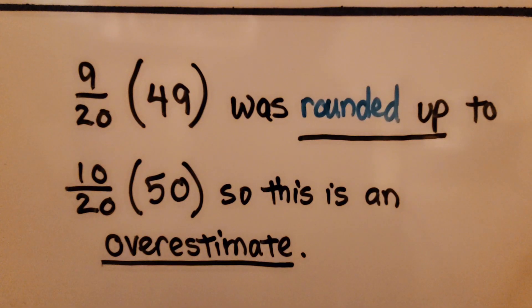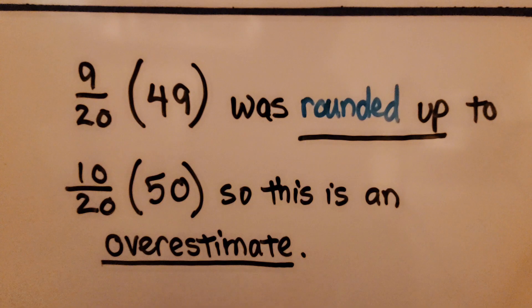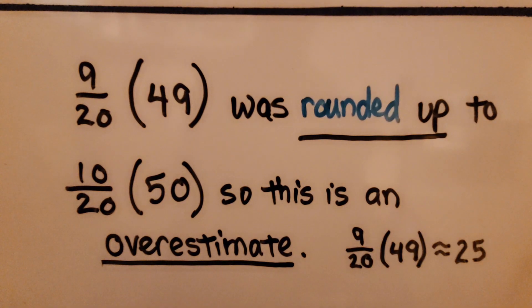We use an approximation symbol because this is an estimate. 9/20 times 49 was rounded up to 10/20 times 50, so this is an overestimate. 9/20 times 49 is approximately 25 is an overestimate.